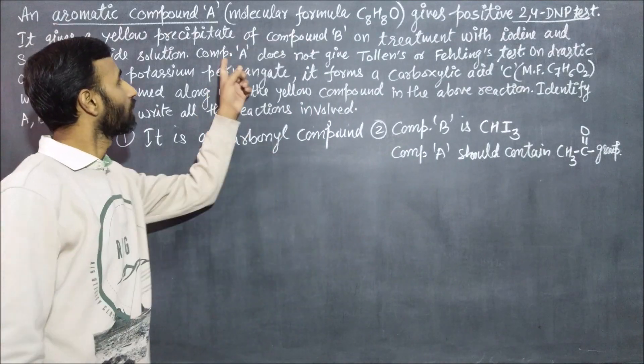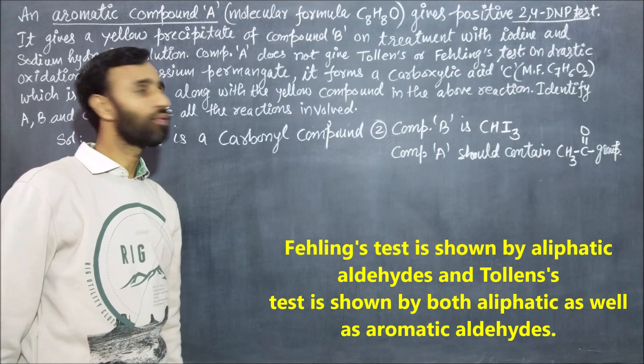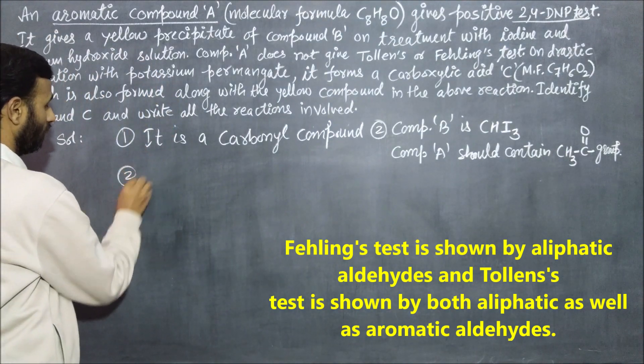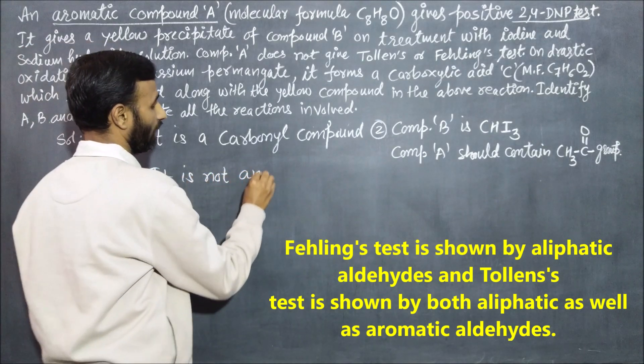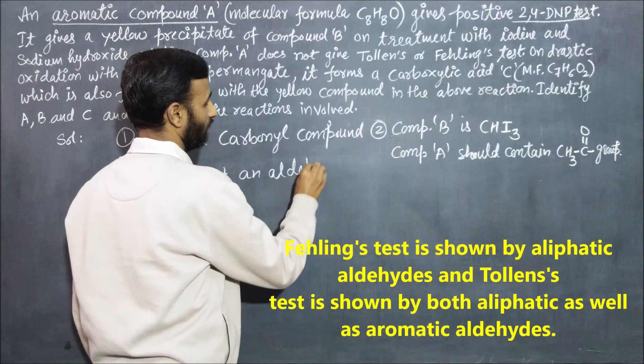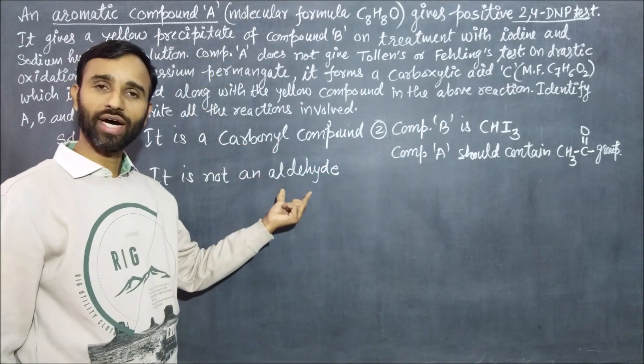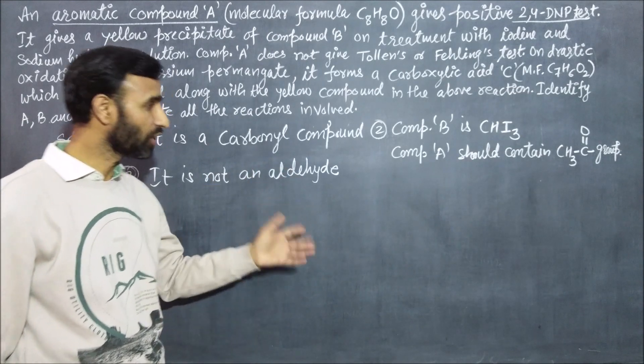Compound A does not give Tollen's or Fehling's test, that means it is not an aldehyde. If it is a carbonyl compound and not an aldehyde, it must be a ketone, which is a methyl ketone.